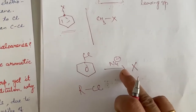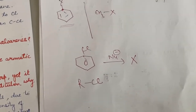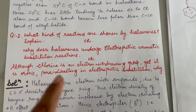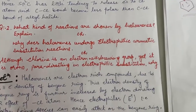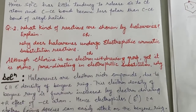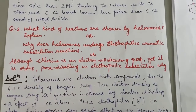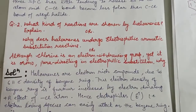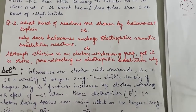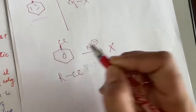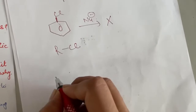Since haloarenes do not readily show nucleophilic substitution, we need to see what kind of reactions they will show. The next question about chemical reactivity is: what kind of reactions are shown by haloarenes — explain. This question can also come as: haloarenes undergo electrophilic aromatic substitution — explain. And also: although chlorine is an electron withdrawing group, it is still ortho-para directing towards electrophilic substitution — explain. We will discuss this. Since the C-Cl bond does not break easily, haloarenes do not show nucleophilic substitution, so what reactions do they show?